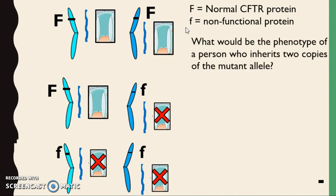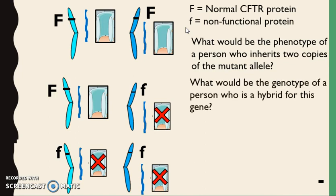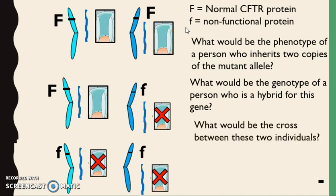What would be the phenotype of a person who inherits two copies of the mutant allele? Their phenotype would be having cystic fibrosis. What would be the genotype of a person who is hybrid for this gene? And what would be the cross between these two individuals? This would be your person with cystic fibrosis, and this would be your hybrid.